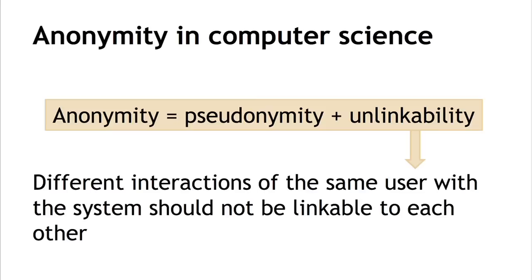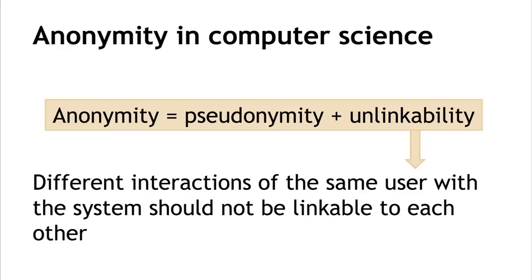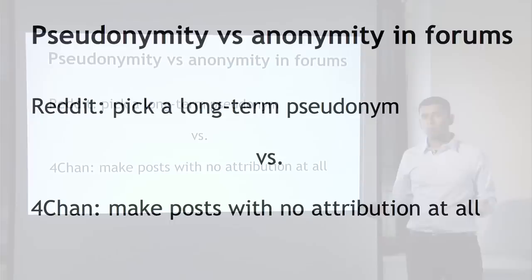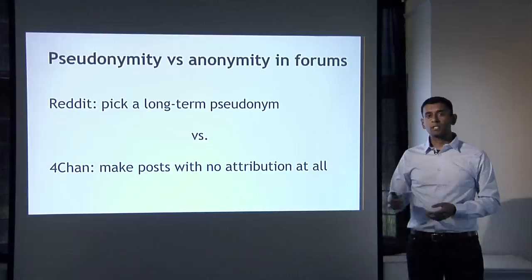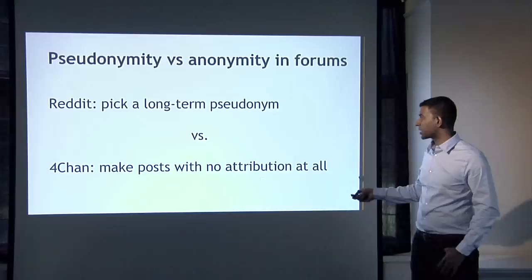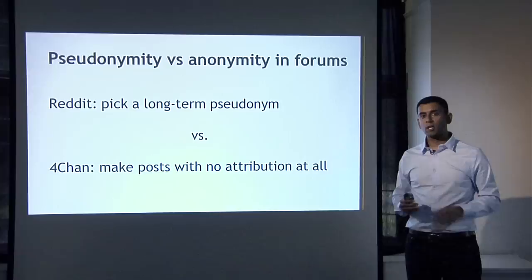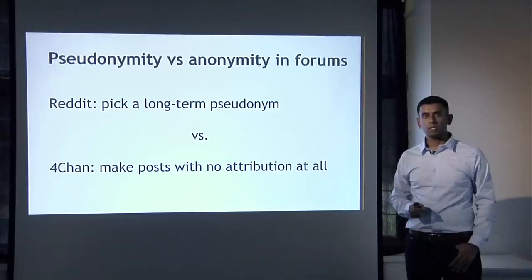A good way to explain this is to look at online forums. Reddit is a good example where you pick a long-term pseudonym and interact over a period of time with it. It's practically infeasible to create a new pseudonym every single time you want to post a comment, so Reddit offers pseudonymous interaction. The opposite — fully anonymous interaction where you can make posts with no attribution at all — is the model in 4chan. Bitcoin is in the pseudonymous model more than the anonymous model.